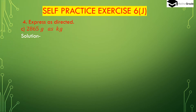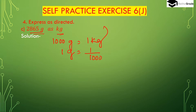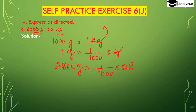Now part c: 2865 grams to kg. We have to convert 2865 grams to kg. We know 1000 grams is 1 kg, so 1 gram will be 1 divided by 1000 of kg. So 2865 grams will be 2865 multiplied by 1 divided by 1000, giving us 2865 divided by 1000 kg.